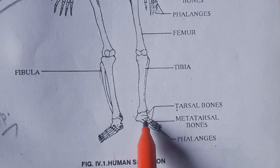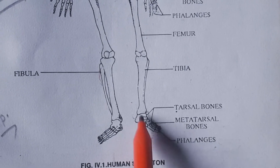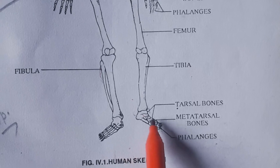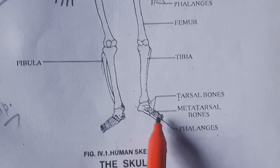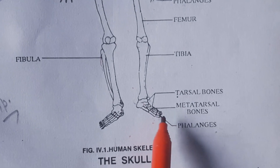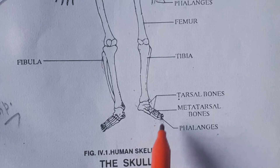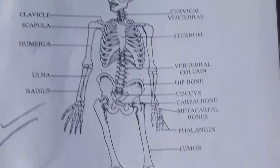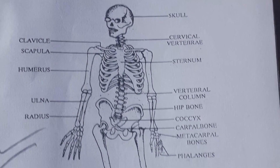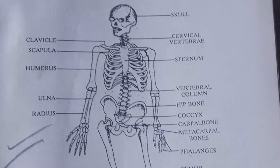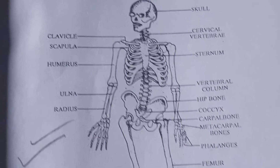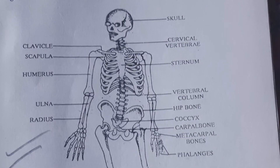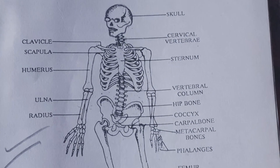The foot bones are categorized as tarsal bones, and the toe bones are called phalanges. This is the complete human skeleton.